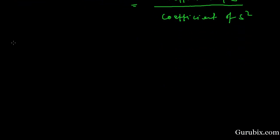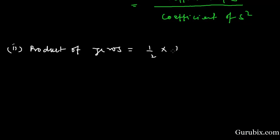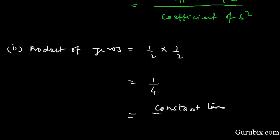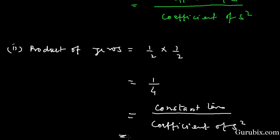Now we shall find the product of zeros, that is 1/2 multiplied by 1/2, which equals 1/4. This ratio equals the ratio of the constant term over the coefficient of s². So both relationships are verified. Thank you.